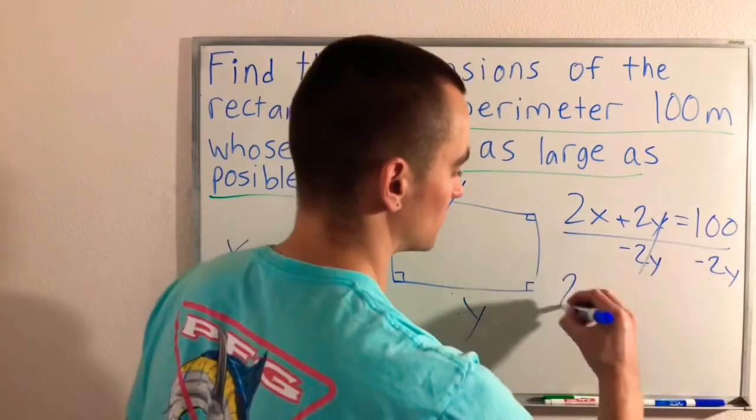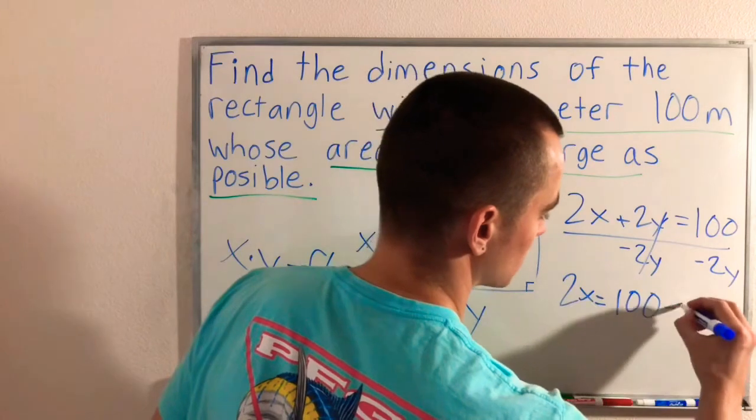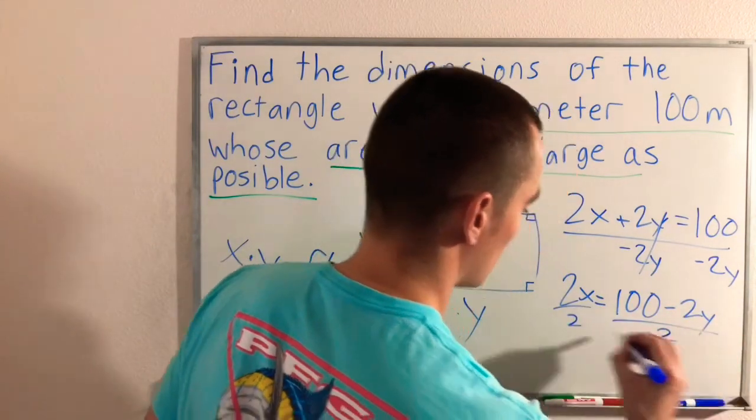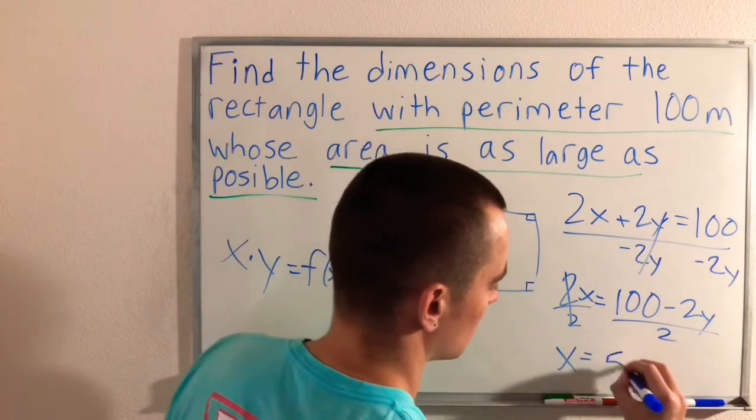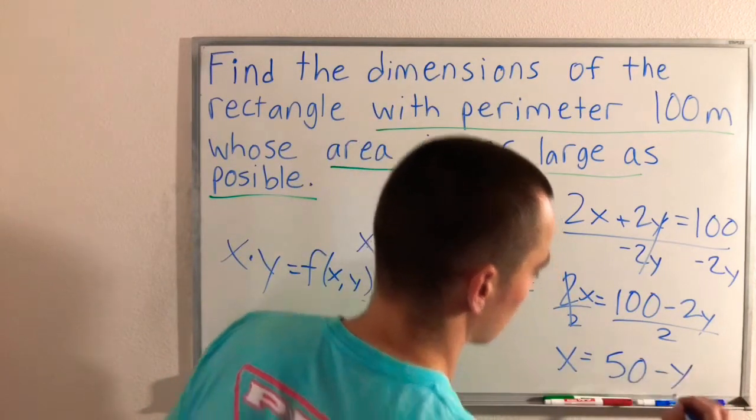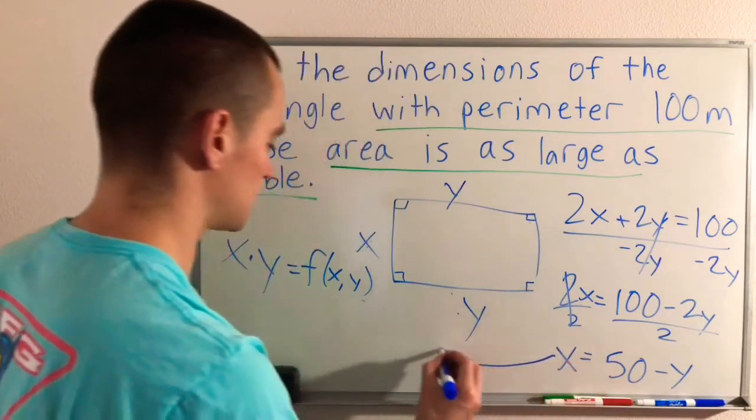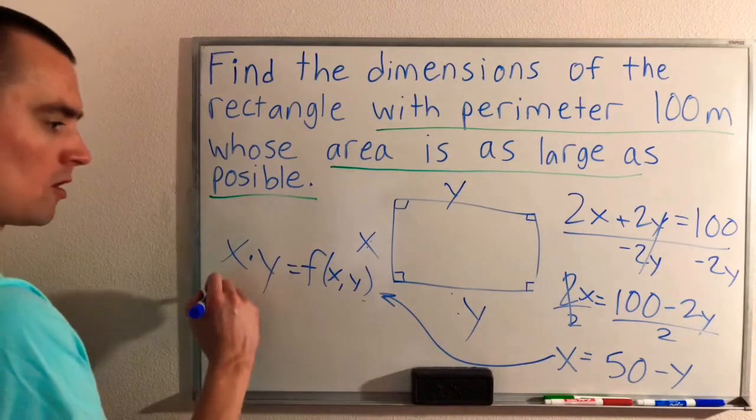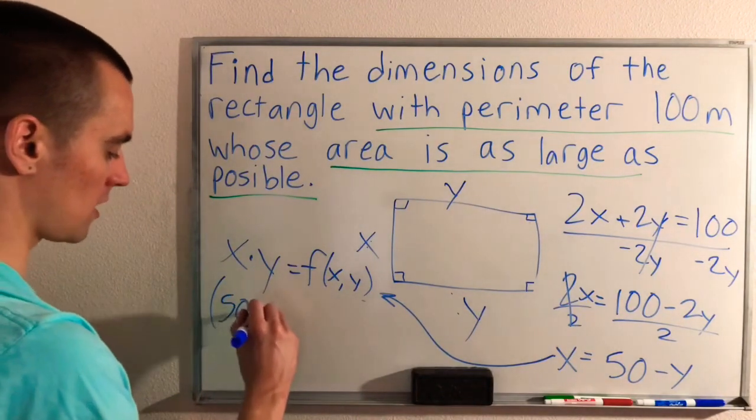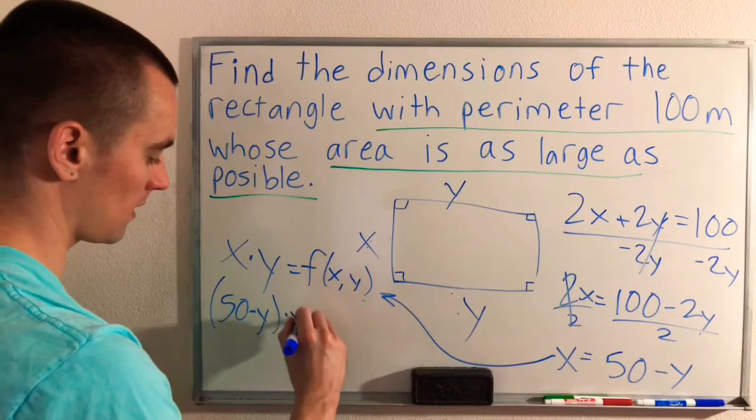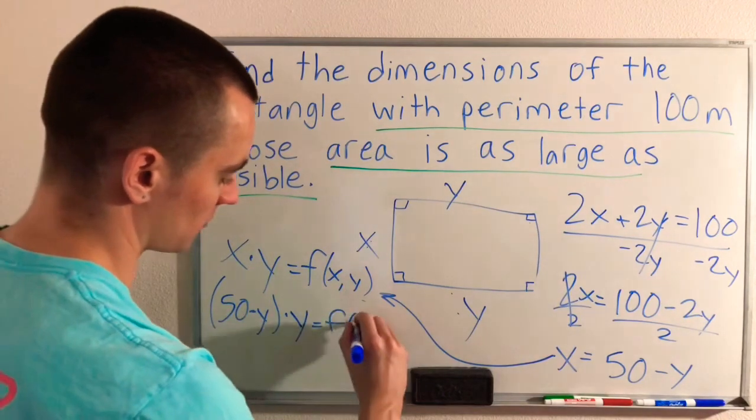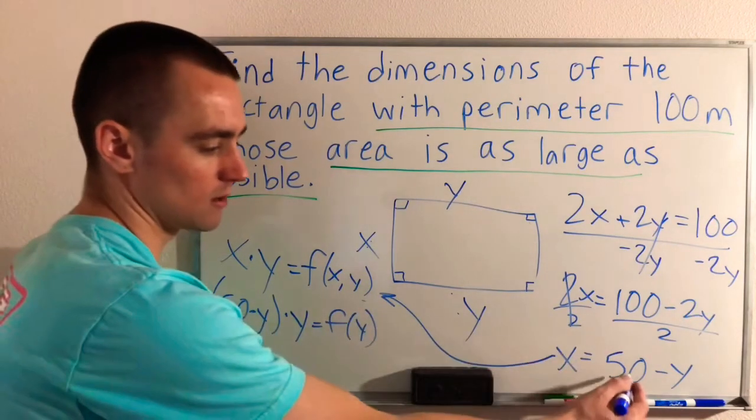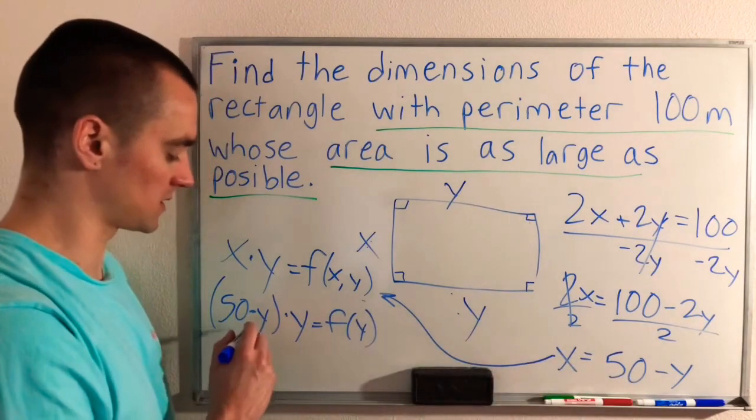That'll cancel there. We'll have 2X equals 100 minus 2Y. Then if we divide both sides by 2, that'll cancel there. And we'll get X equals 50 minus Y. So now if we take this X and we plug it in for X into this equation over here, we would get 50 minus Y times Y. And now this function is just a function of Y. We've replaced all our X's with just putting it in terms of Y. So now it's a single variable function.